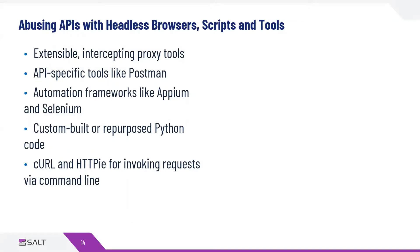To understand how attackers achieve account takeover, we need a little bit of background knowledge on how they automate their API requests. The ways they do that are actually very similar to how application developers, API designers, or security testing teams work. The tooling can be very similar. Extensible intercepting proxy tools like PortSwigger Burp Suite or OWASP Z-Attack Proxy are very common tools of the trade. And if you are more in the design-time world of APIs, you're likely working with Postman.